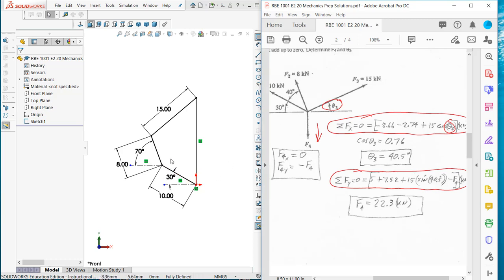We have the 10 kilonewtons at 30 degrees, 8 at 70. We have the 15 but we don't know the angle, but we know that it's going to connect to a vector that's going to go straight down. So I set this up and put everything that we know: the 10 at 30, the 8 at 70, the 15 length here, and we know this one's going straight down. I just have this little constraint which forces that to be vertical.